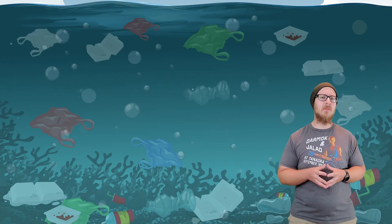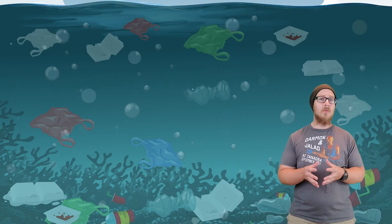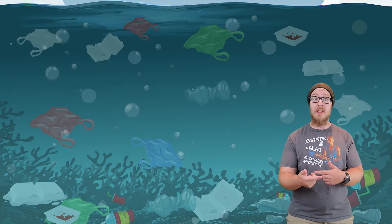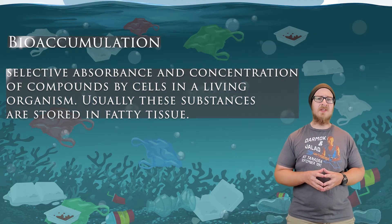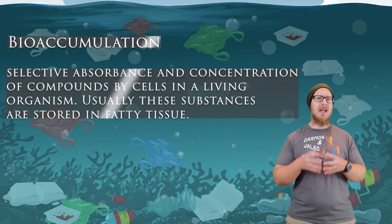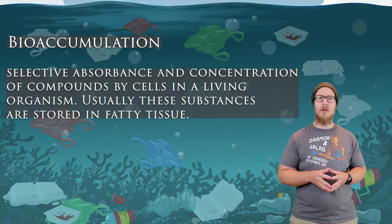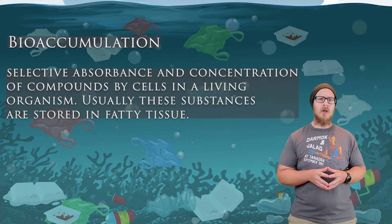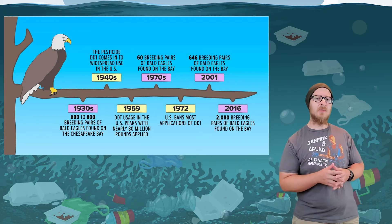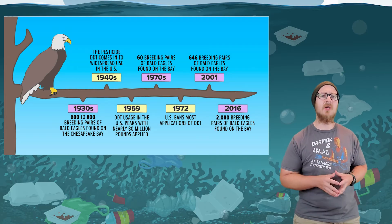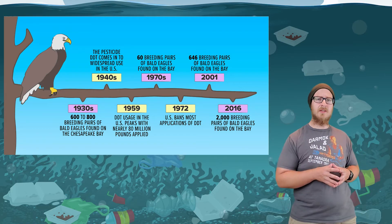Many POPs are fat-soluble, meaning they are stored in fatty tissue, which allows the pollutant to accumulate in an organism's fatty tissue. Bioaccumulation is the selective absorbance and increased concentration of compounds by cells in a living organism. We've seen this with the accumulation of DDT in eagles, which led to them producing thinner eggshells, causing low survival rates and putting them on the endangered species list.